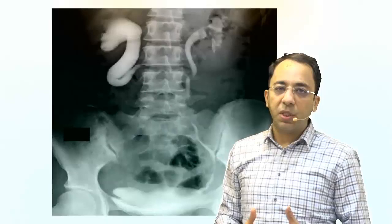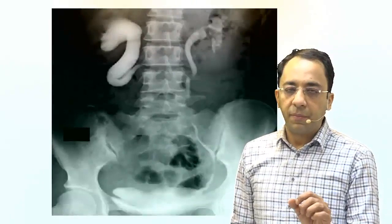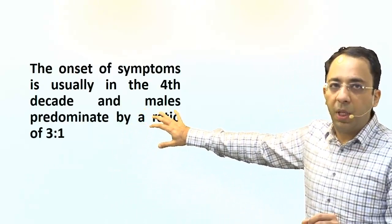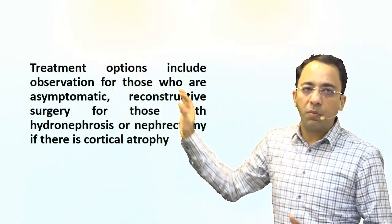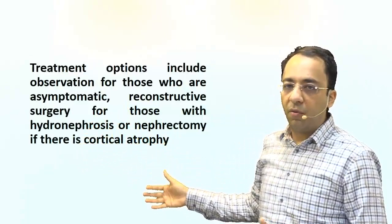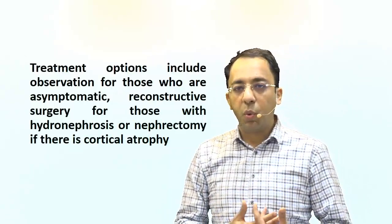This is called a retrocaval or circumcaval ureter. These people may be totally asymptomatic in the initial part of life, but later may come with pain and symptoms of ureteric obstruction with resultant hydronephrosis. There is a male predominance with usual onset in the fourth decade. If it is an asymptomatic finding picked up on radiology, treatment includes only observation, but if symptomatic, surgery may be needed for hydronephrosis, or even nephrectomy if there is cortical atrophy.